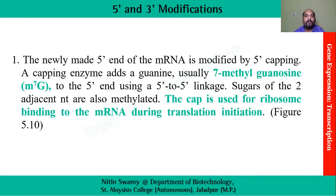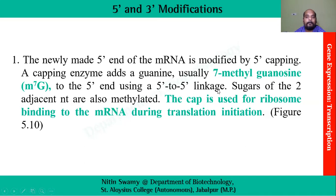Now we will go into the modifications. At the 5' end there is capping: a capping enzyme adds a guanine, usually 7-methylguanosine, to the 5' end with a 5'-to-5' linkage. This linkage is very unique because all other linkages are 5' to 3', but this is the only linkage which is 5' to 5'. The cap is used for ribosome binding to the mRNA during translation initiation.